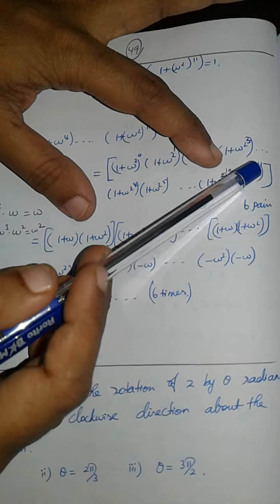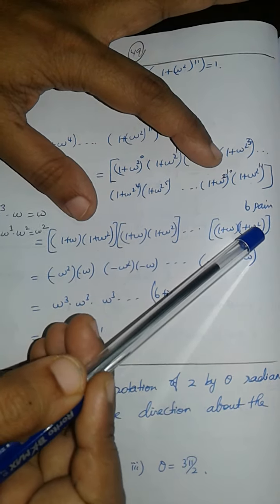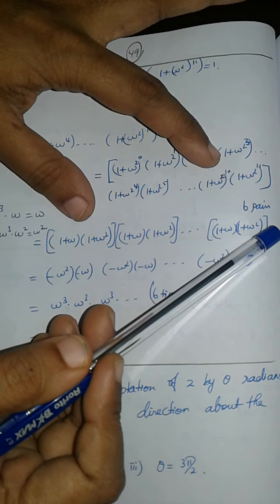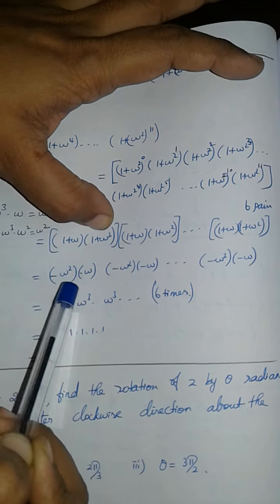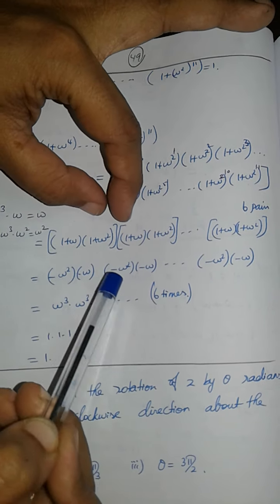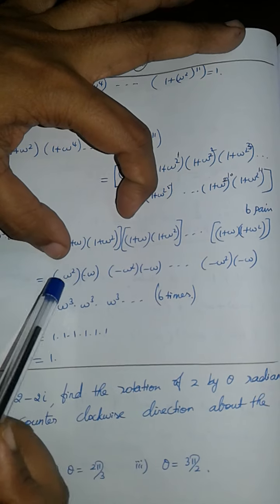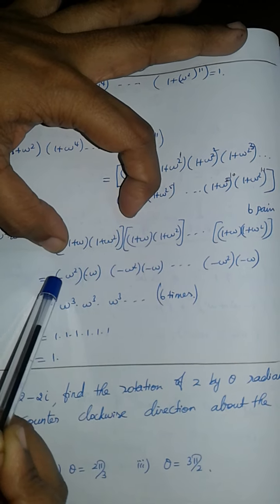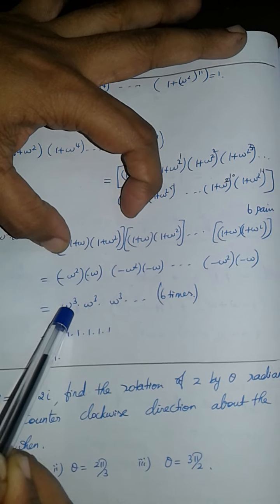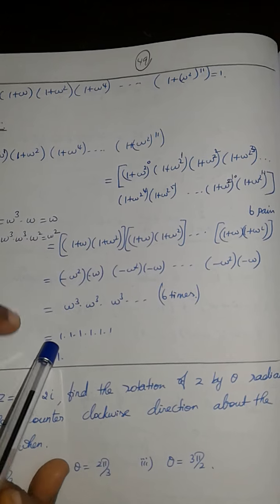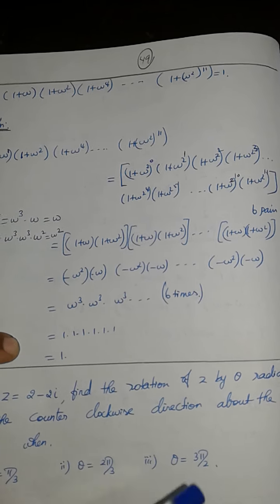With 2 power 11, we have 2. With 3 tables, we have 2. The answer involves 1 plus omega squared. Now, 1 plus omega squared is minus omega, and 1 plus omega is minus omega squared. In each pair, the product of minus omega squared and minus omega gives, since minus times minus is positive, omega squared times omega equals omega cubed. This is 6 times. Omega cubed is 1, so 1 times 1 times 1 six times is 1. This is what we had to prove.